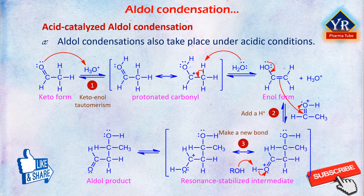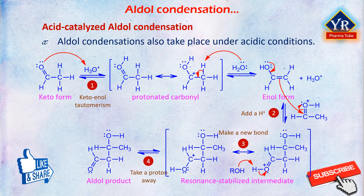The third step is formation of a new bond between a nucleophile and an electrophile: attack by the enol of one molecule on the protonated carbonyl group of another molecule forms the new carbon-carbon bond. Step 4 is proton transfer to A⁻, which regenerates the acid catalyst and gives the racemic aldol product.